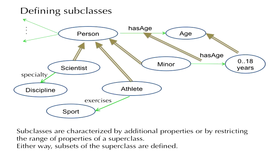Now take the example of the class minor, declared as a subclass of person. Minors are persons below a certain age, so the subclass minor is all those people with age between 0 and 18. In this case the subclass minor was defined not by adding an additional property, but by restricting the range of the age property to the subrange 0 to 18 years. So we have two main ways of producing subclasses: by attributing additional local properties, or by restricting the range of a property of the superclass.